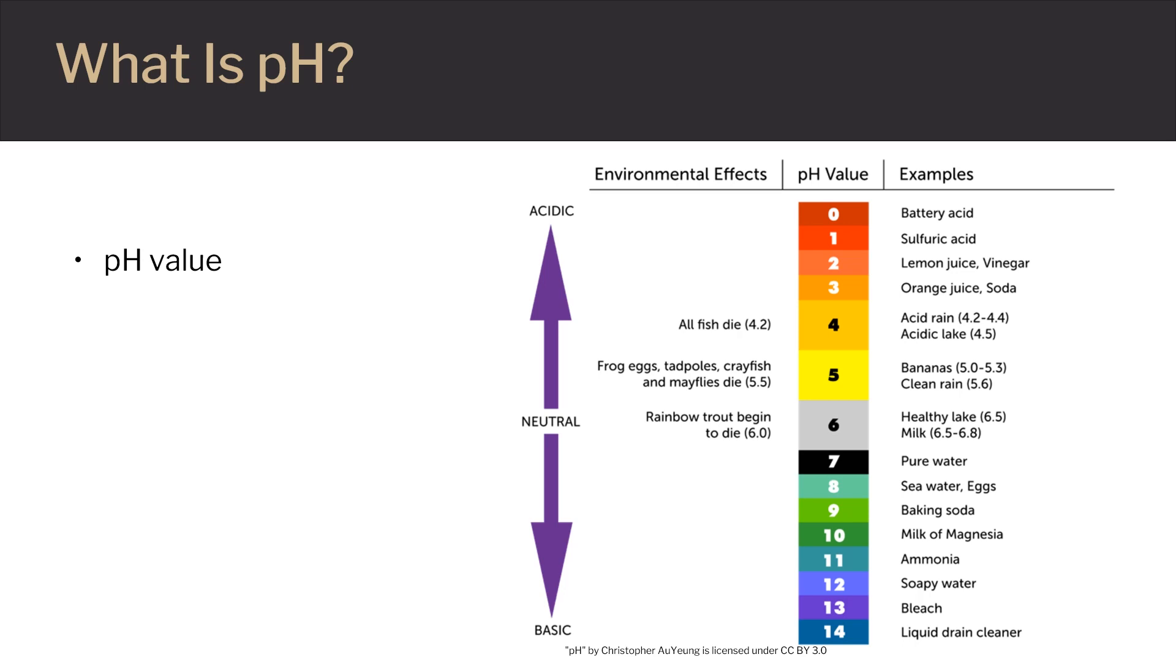More precisely, pH is defined as the negative log of the hydrogen ion concentration. The range of pH extends from 0 to 14. A pH value of 7 is neutral, because pure water has a pH value of exactly 7. Values lower than 7 are acidic. Values greater than 7 are basic or alkaline.